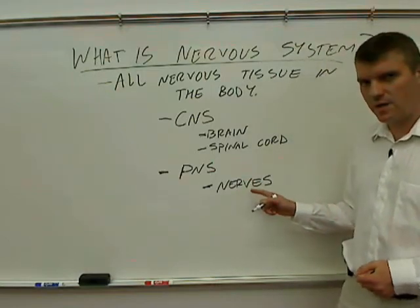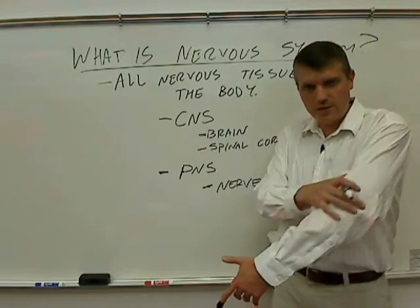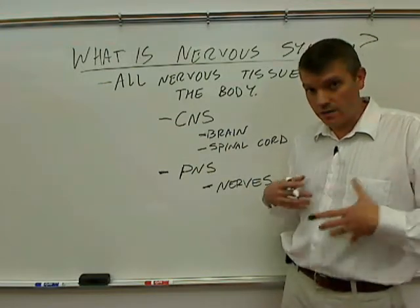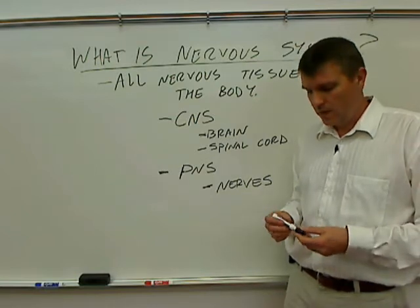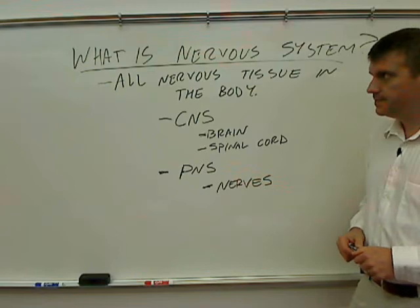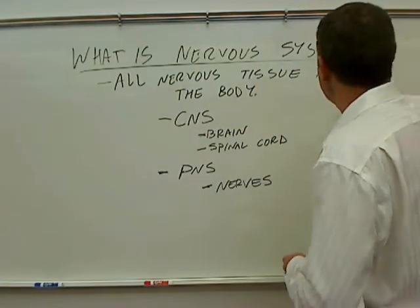You could think of the PNS as being all of the rest of the nervous tissue of the body. The nerves that go out to the limbs, the nerves that go to the visceral organs, to the heart, to the lungs, etc. So that is what it is.